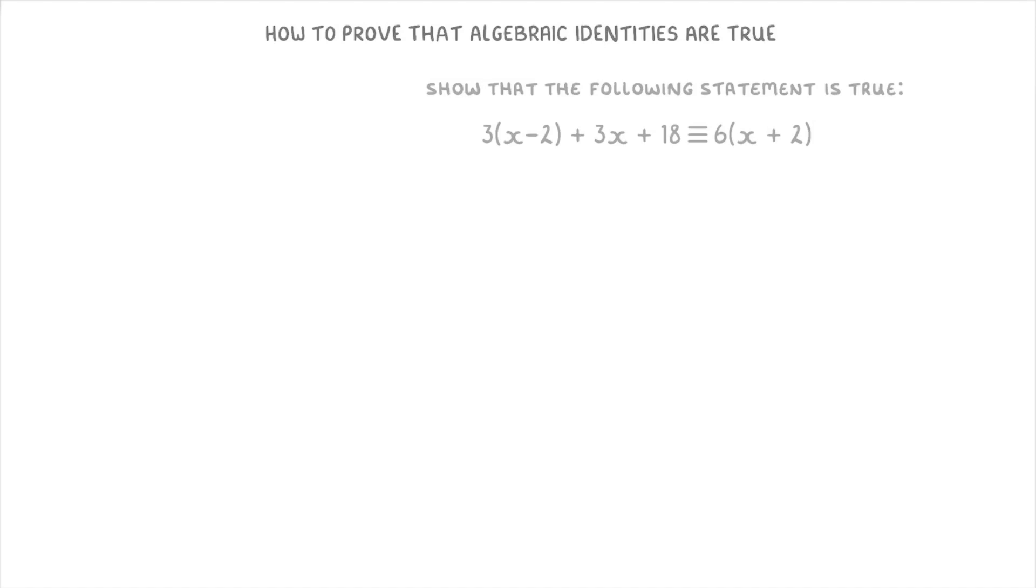If we use this question as an example, this equation here is known as an algebraic identity, which just means that for any value of x that we pick, this left hand side will always be equal to this right hand side.